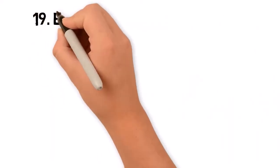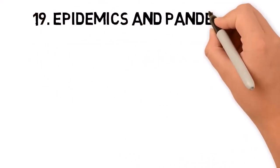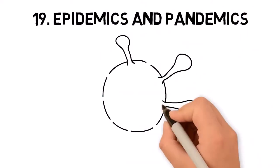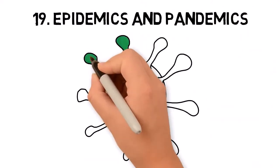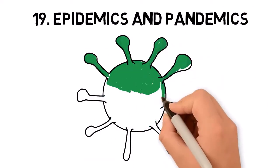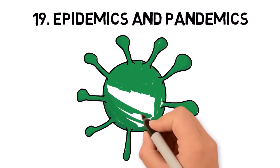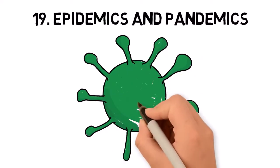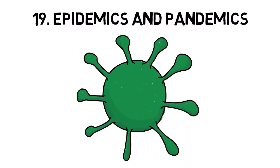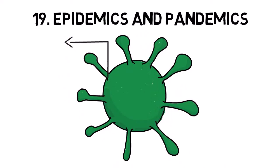Epidemics and pandemics occur when an infectious disease spreads rapidly among a large number of people within a community, region, or globally. While not a natural disaster in the traditional sense, they are catastrophic events caused by biological factors.